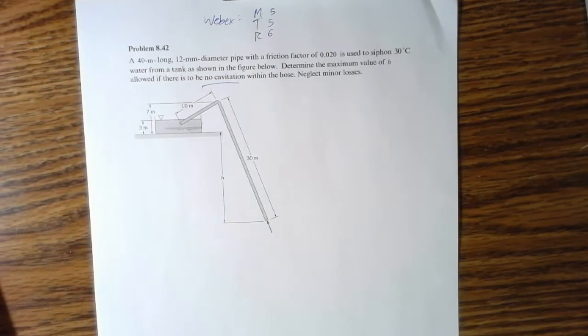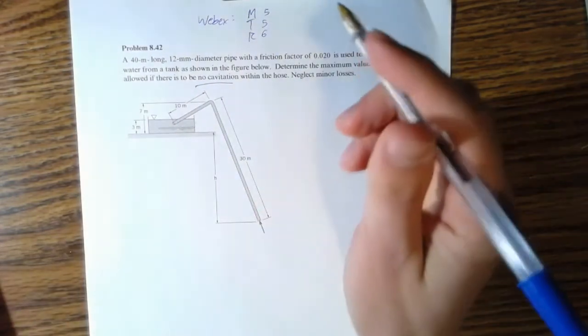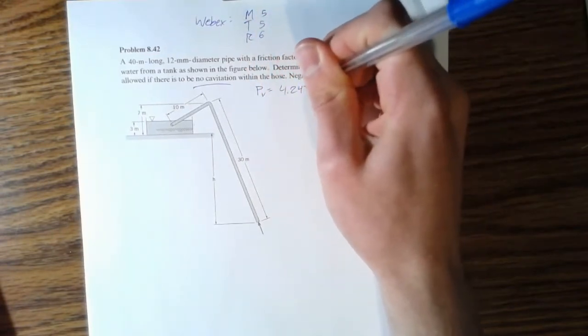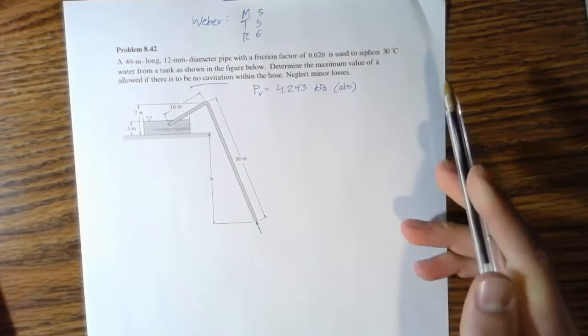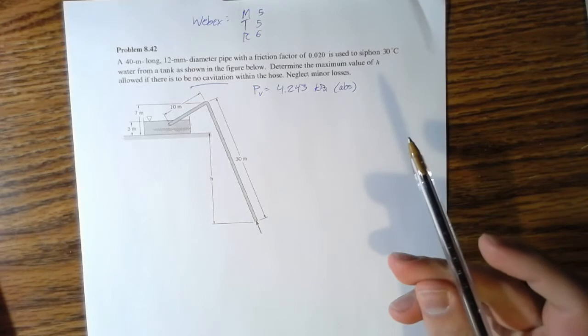I'm not sure if you guys remember cavitation or not, but the idea is the minimum pressure has to be above the vapor pressure. Vapor pressure for water is 4.243 kilopascals absolute.